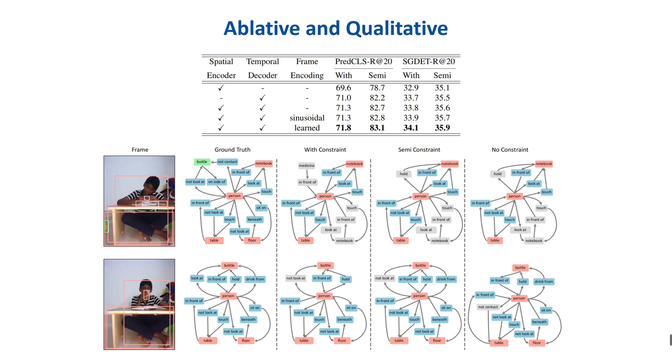We ablate different components of spatial temporal transformer to clarify how these modules contribute to the performance. When only the spatial encoder is enabled, the model works the same as the image-based method and also has a similar performance as VRD-Net.